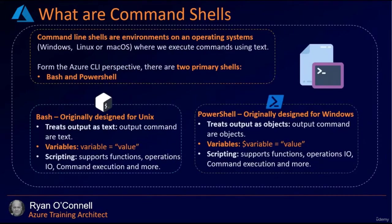Command shells are environments on an operating system — Windows, Linux, or macOS — where we execute commands using text. From the Azure CLI perspective, there are two primary shells: Bash and PowerShell. Bash was originally designed for Unix and treats output as text. PowerShell was originally designed for Windows and treats output as objects, allowing scripting, support functions, and more.